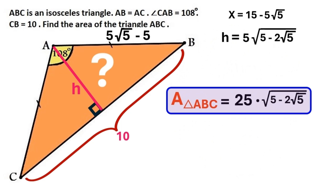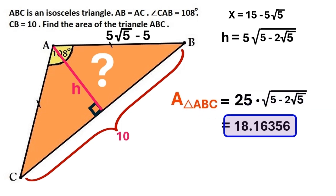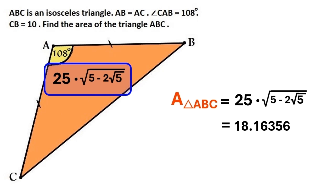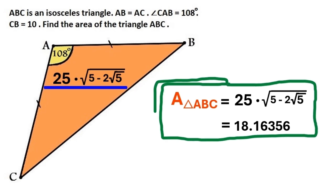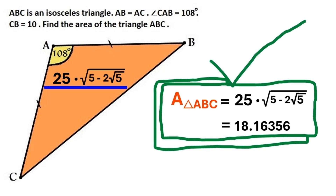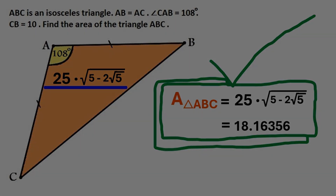I never do calculations beyond this point, but one of my viewers asked me to find the decimal number, and what my viewers want is important to me. So only for this time, I'm going to calculate the answer in decimals, and it's 18.16356 rounded to 5 decimals. If you enjoyed this video, make sure you push the like button and don't forget to subscribe. There are many super cool math problems I want to show you in the future, and trust me, you don't want to miss them. Have a good day — I'll see you soon.